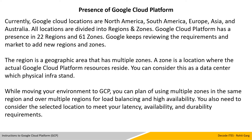Presence of Google Cloud Platform. Currently, Google Cloud locations are North America, South America, Europe, Asia and Australia. All locations are divided into regions and zones. Google Cloud Platform has presence in 22 regions and 61 zones. There is a higher possibility that when you view this video these numbers have changed, because Google keeps reviewing the requirements and market to add new regions and zones. The region is a geographic area that has multiple zones. A zone is a location where actual Google Cloud Platform resources reside — you can consider this as a data center where physical infrastructure stands. While moving your environment to GCP, you can plan on using multiple zones in the same region or over multiple regions for load balancing and high availability.